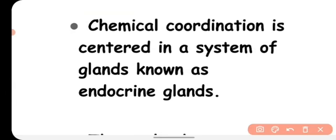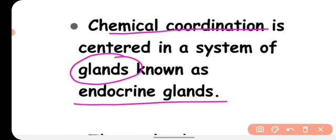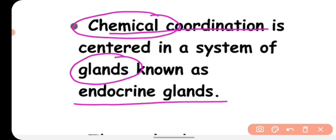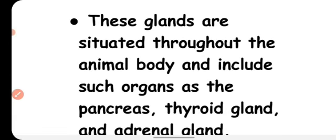Chemical coordination is centered in a system of glands known as endocrine glands. In this kind of system, a very special kind of chemical is released in our body to control and coordinate our body systems. These glands are situated throughout the animal body and include organs such as the pancreas, thyroid gland, and adrenal gland.